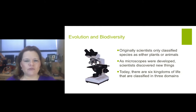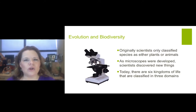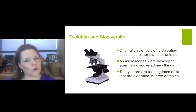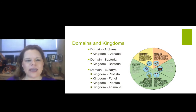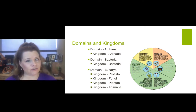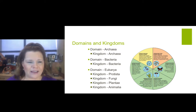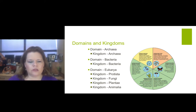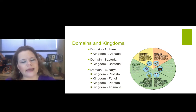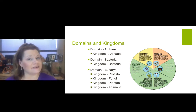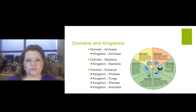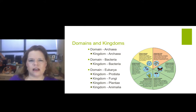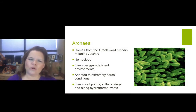Evolution and biodiversity. Originally scientists classified species either as plants or animals, but that has subsequently changed. As microscopes were developed, scientists discovered new things about biodiversity. Today there are six kingdoms of life classified in three separate domains. Kingdom Archaea is in Domain Archaea. Domain Bacteria has a kingdom called Bacteria. Domain Eukaryotes is what we're part of — it has four kingdoms: Protista, Fungi, Plantae, and Animalia. If you want to consider where you fall in that, it's the last kingdom.